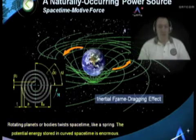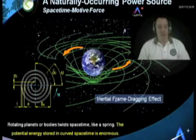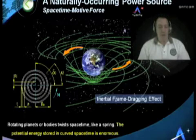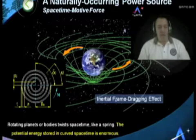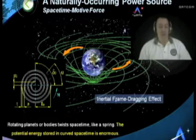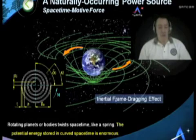That effect of twisting of space-time is called, in physics, inertial frame dragging. The potential energy stored in curved space-time around the rotating Earth, or any moon or any planet, is like a spring. And if that rotating body, like the Earth, were to be removed, that spring would snap back. The difference is that the potential energy stored in curved space-time is absolutely enormous.